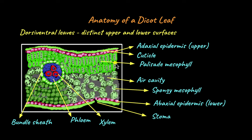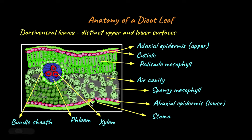So now do you understand why dicot leaves are called dorsi-ventral leaves? They have a distinct ventral surface, the upper surface, made up of palisade mesophyll, and a distinct dorsal surface, the lower surface, made up of spongy mesophyll.